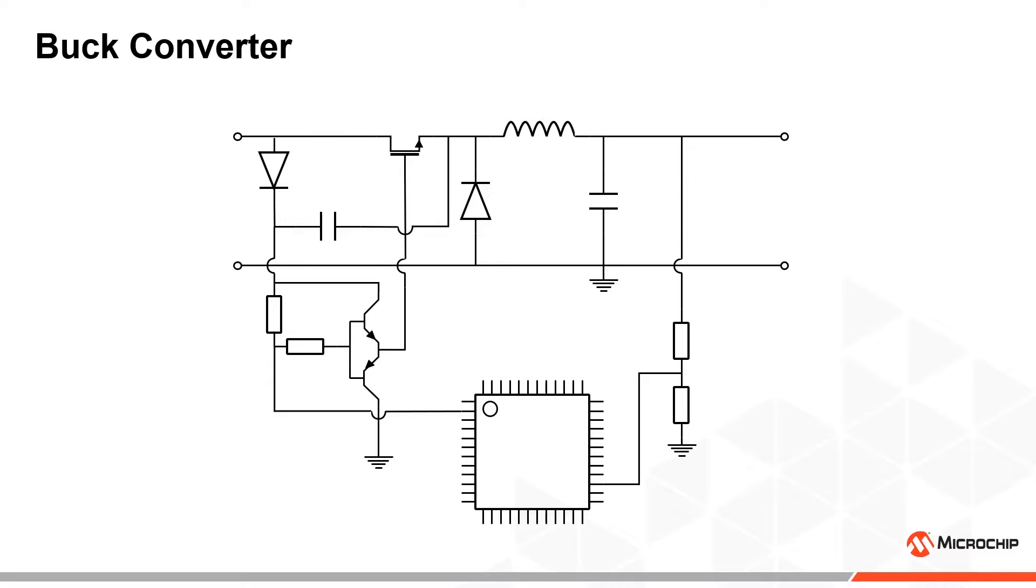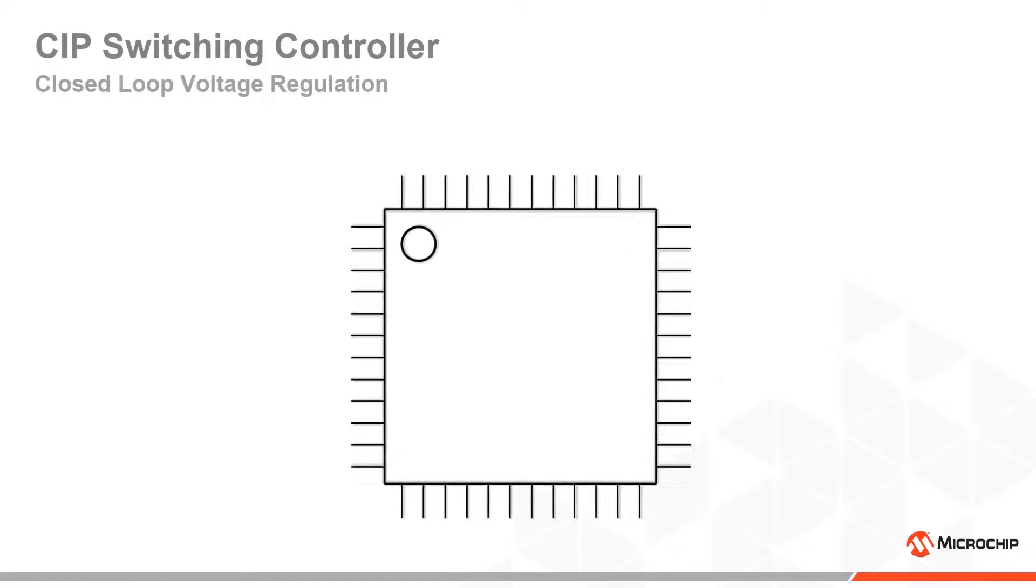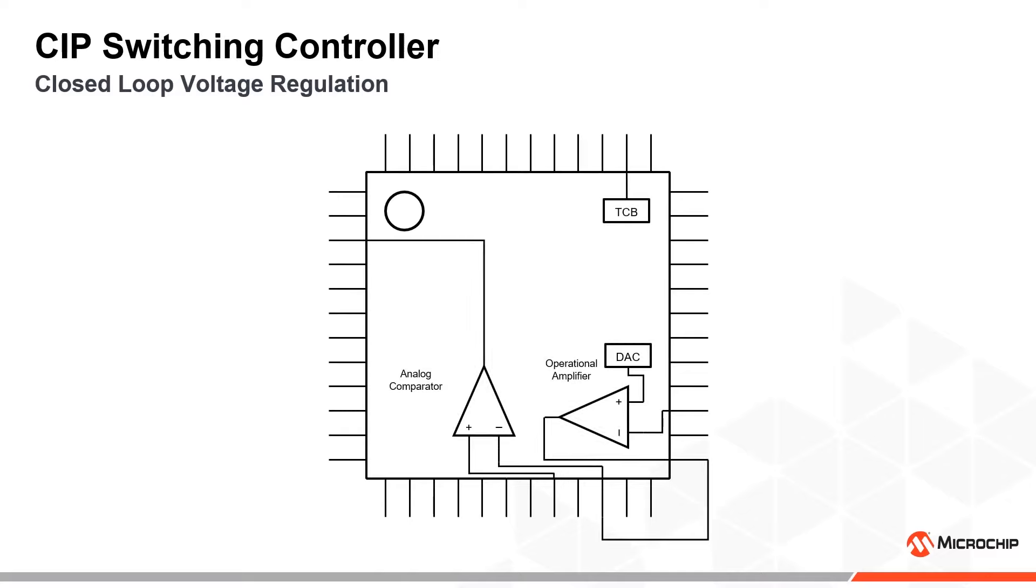There are multiple ways to implement the feedback loop, but in general, they all follow similar principles. Let's use closed loop voltage controlled feedback for simplicity. This can be implemented using an integrated op-amp, analog comparator and a timer.